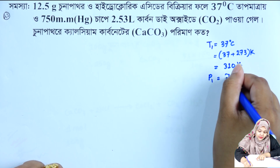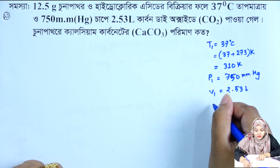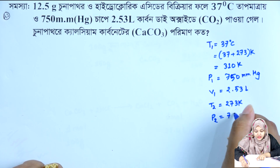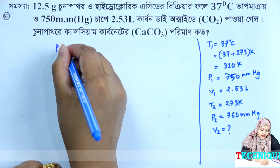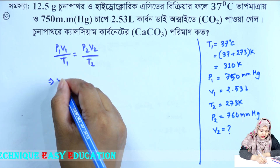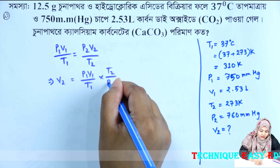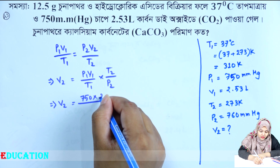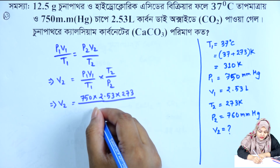P1 is equal to 750 mmHg. V1 is equal to 2.53 L. STP is equal to 273 Kelvin. P2 is equal to 760 mmHg. T2 is equal to 273, and T1 is equal to 310.